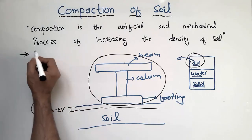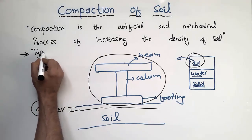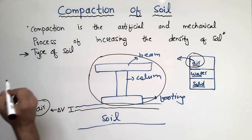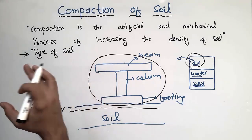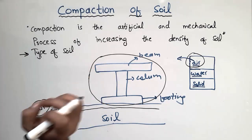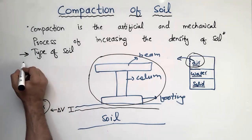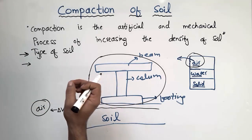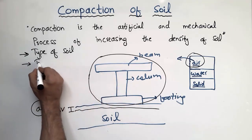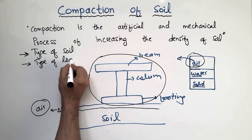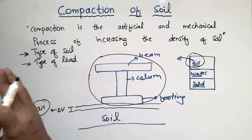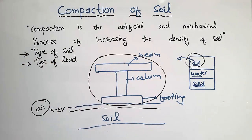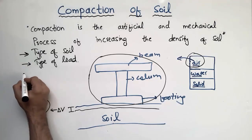There are some factors which affect the compaction of soil. The first factor is the type of soil — clay, gravel, and sandy soils have different requirements for compaction because of their particle size and particle size distribution. The second factor is the type of load — whether the load acting on the soil is static or dynamic, as this quite affects the compaction process differently for sandy soil versus clay soil.